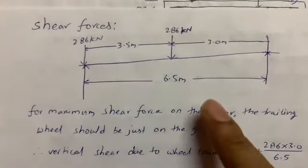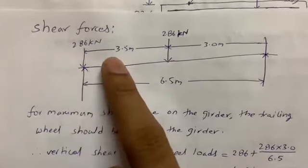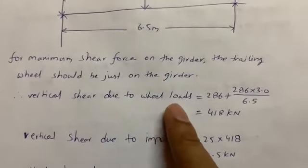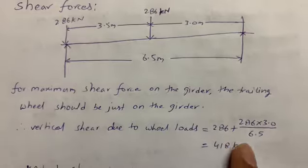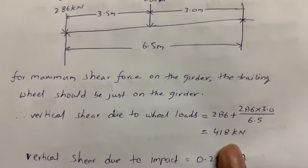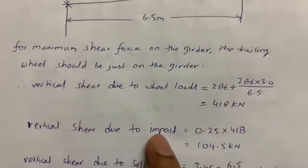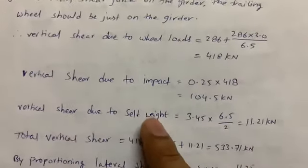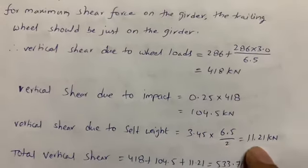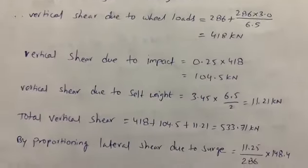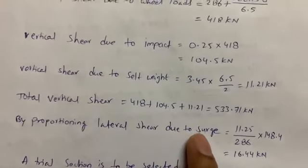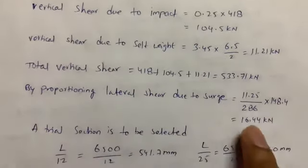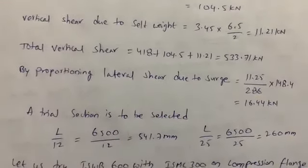For shear force calculations: the diagram shows 286 kN and 286 kN loads with 3.5 m spacing on a 6.5 m span. Vertical shear due to loads = (286 + 286 × 3/6.5) = 418 kN. Vertical shear due to impact is similarly calculated using the 25% factor. Vertical shear due to self-weight = 3.45 × 6.5/2 = 11.21 kN. Lateral shear due to surge (horizontal) is obtained by proportioning: 11.25/286 × 418.